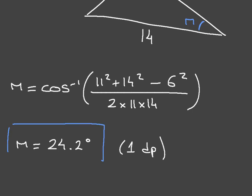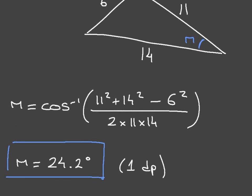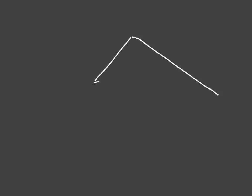And there you go — we've just calculated one of the interior angles of this triangle using the cosine rule. Let's look at another example. We're given a triangle with side lengths 6, 8, and 10, and we're asked to find this interior angle, which we'll call Q.